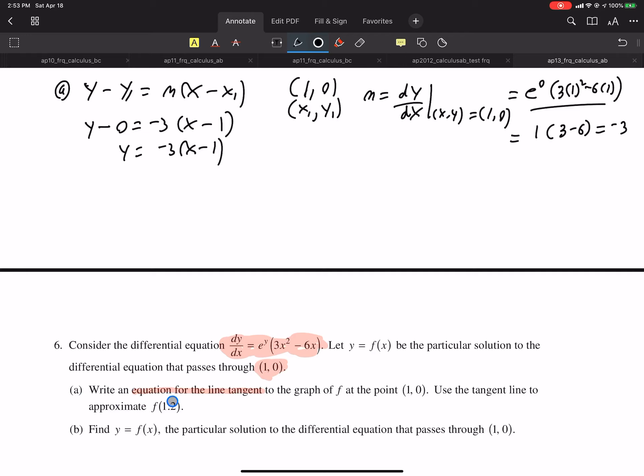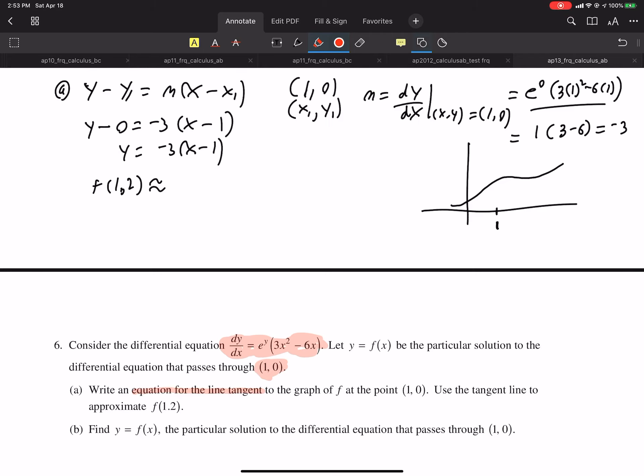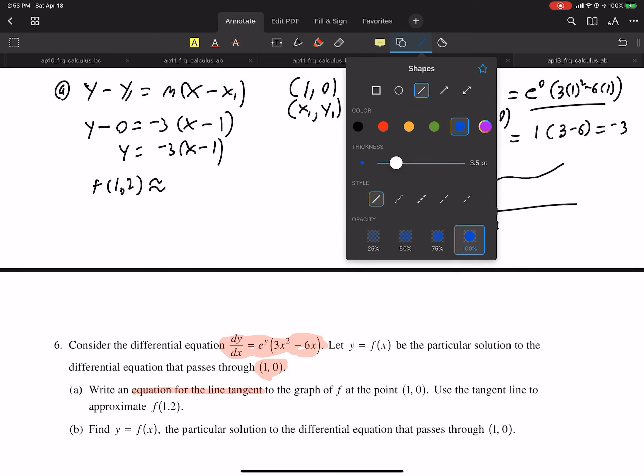Use a tangent line to approximate f at 1.2. So we will say f(1.2) is approximately equal to... So here's what's going on. I'm going to draw a picture. I don't know what this function looks like. I'm just going to make something up. I just made that up because I'm crazy like that.